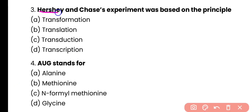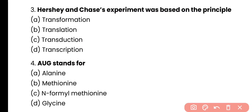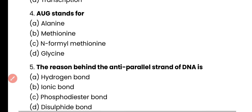Question number 3. The Hershey and Chase experiment was based on the principle of transformation, translation, transduction, or transcription? Correct answer is option C. The Hershey and Chase experiment was based on the principle of transduction in bacteria.